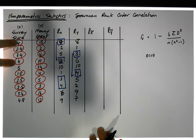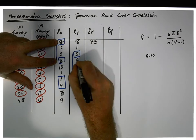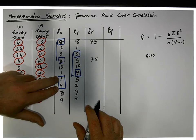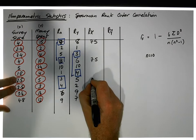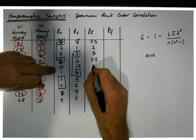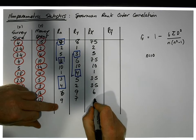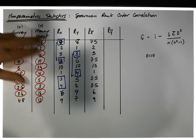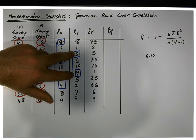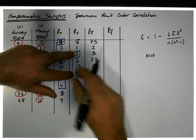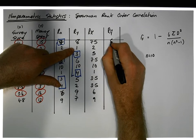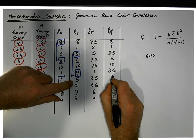The seven and eight represent the two fours in X, so the average of seven and eight is 7.5 — both get 7.5. The two 3.5 values in X were ranked third and fourth, so the average of three and four is 3.5 — both get 3.5. Everything else remains the same: 2, 5, 10, 1, 6, 9. Likewise, for the Y variable, the two fours were given ranks three and four, so their average is 3.5 — both get 3.5. Everything else stays the same: 1, 8, 6, 10, 5, 2, 9, 7.